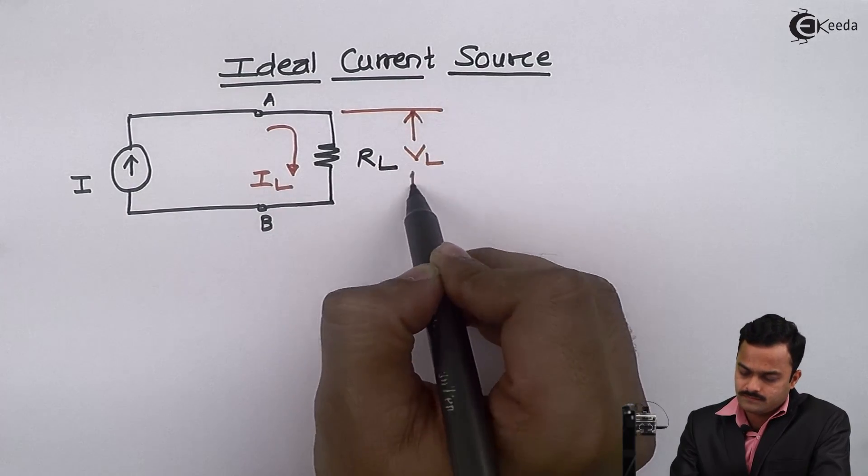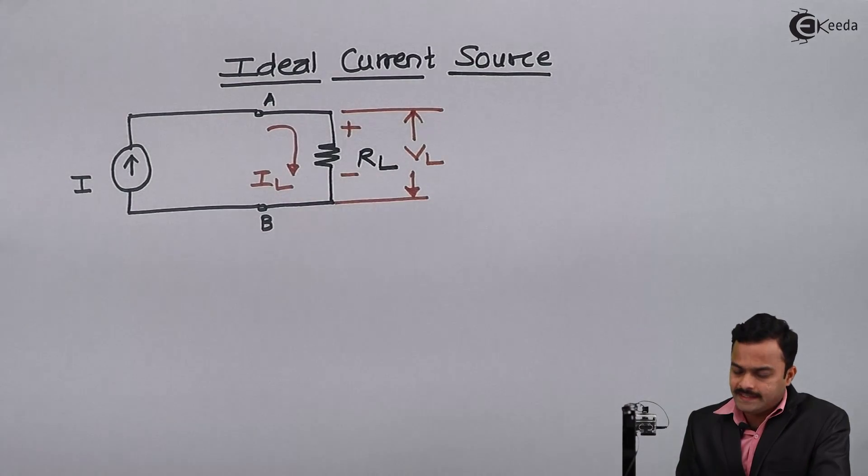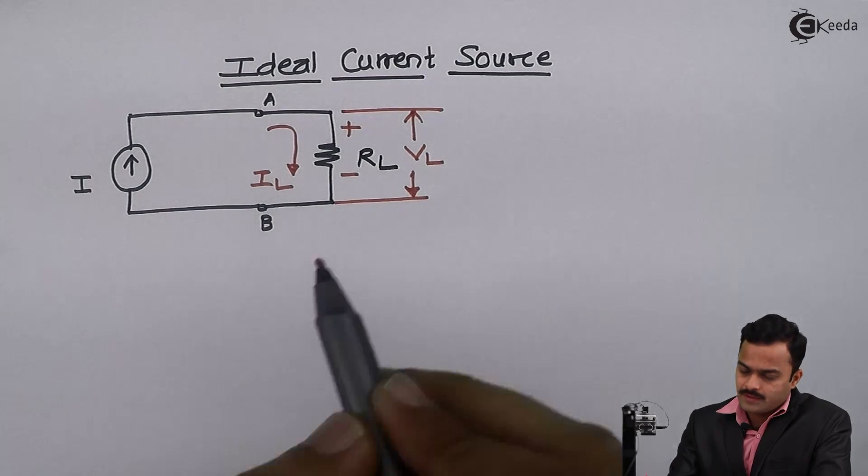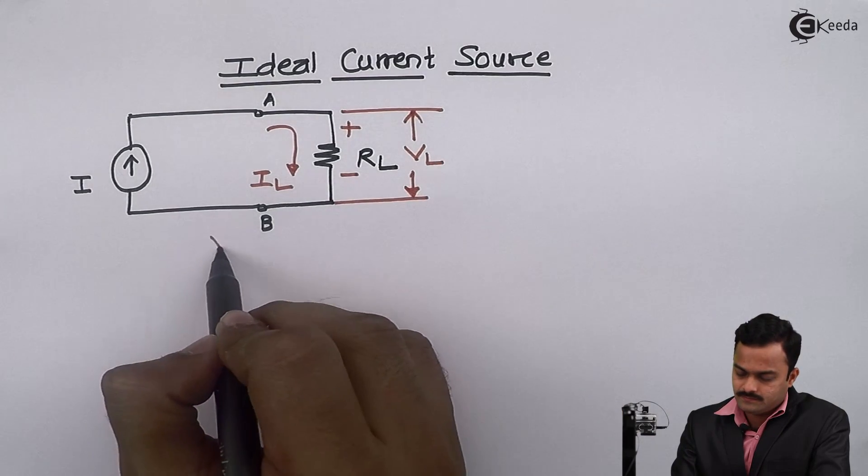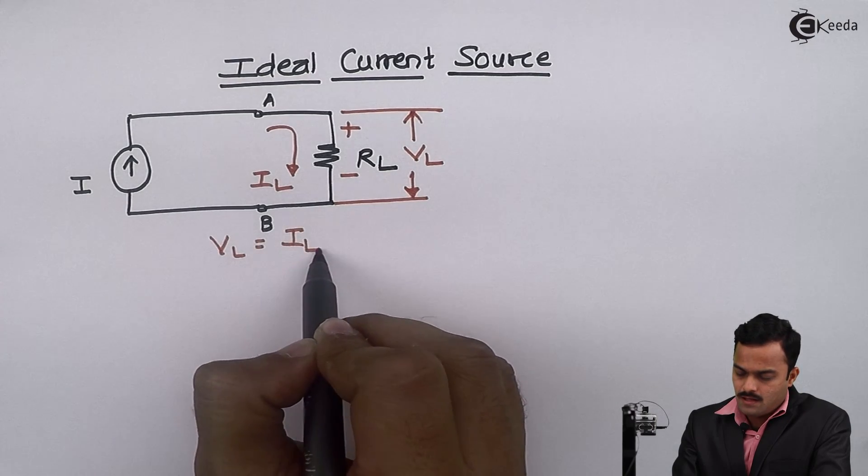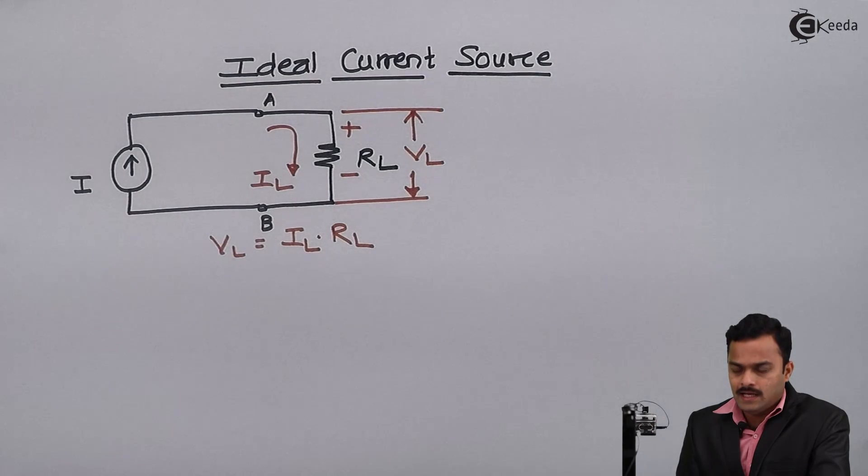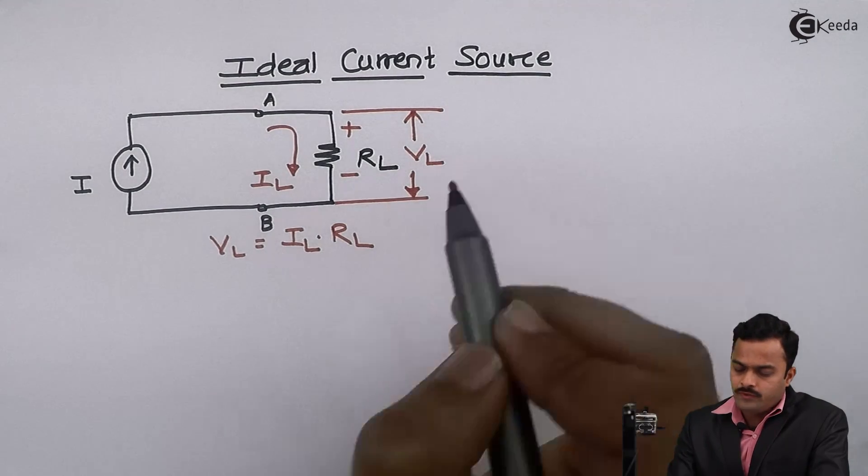Since current is flowing through the RL, I will get voltage across it of this polarity. So I can say voltage VL is IL into RL.